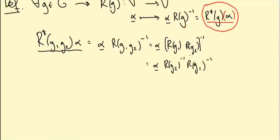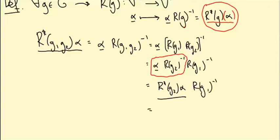And now let's look at this bit here. Alpha underline R(G_2 inverse) is the row vector corresponding to R star G_2 alpha. And now this is the row vector corresponding to R star G_1 R star G_2 of alpha.